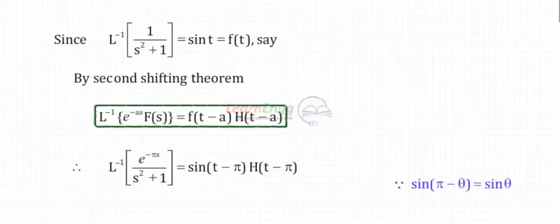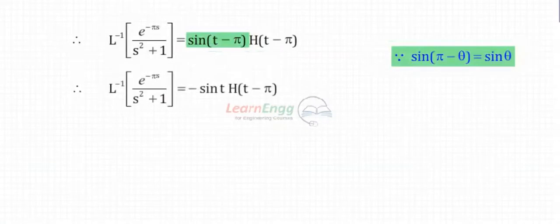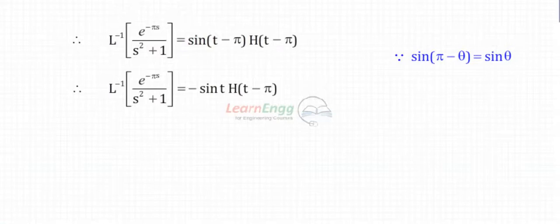The Laplace inverse of e^(-πs) / (s² + 1) is equal to sin(t - π) · H(t - π). Since sin(t - π) = -sin(t), this simplifies to -sin(t) · H(t - π).